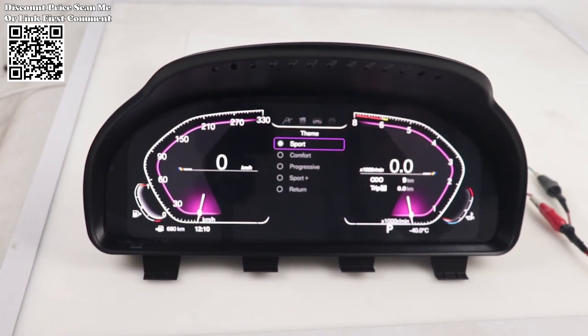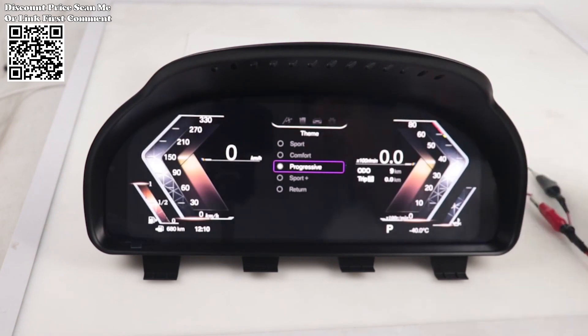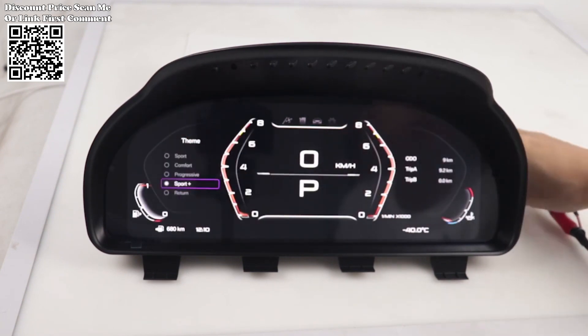Transform your BMW X5 E70 or X6 E71 2007 to 2013 into a cutting-edge automotive marvel with the M Sport digital cluster virtual cockpit car multimedia player available on AliExpress. This innovative dashboard speedometer screen boasting a generous 12.3 inch display redefines in-car entertainment and functionality.